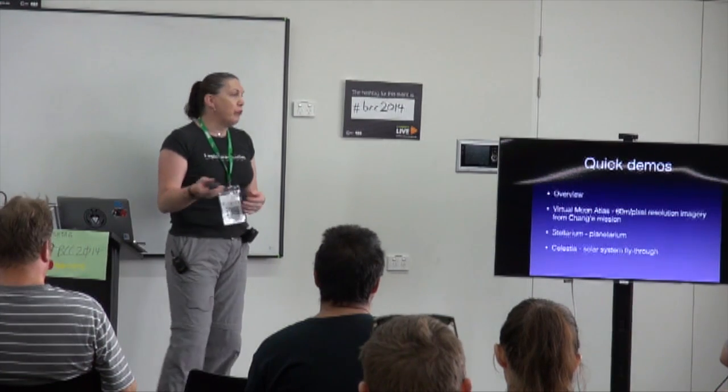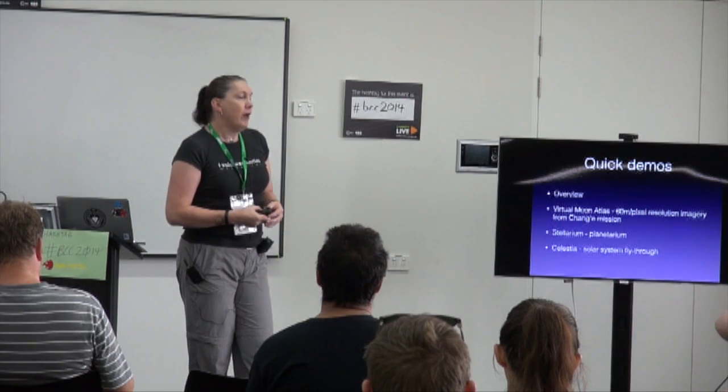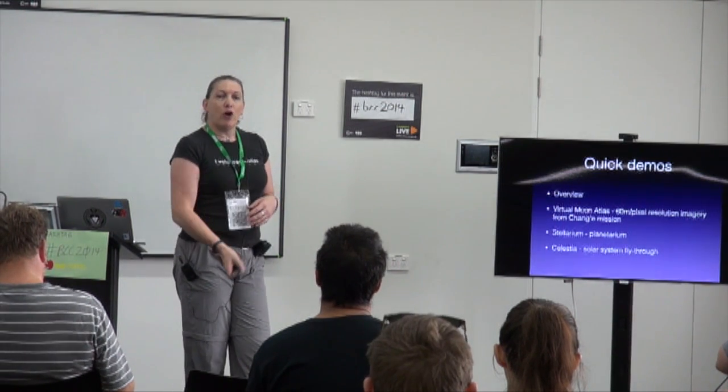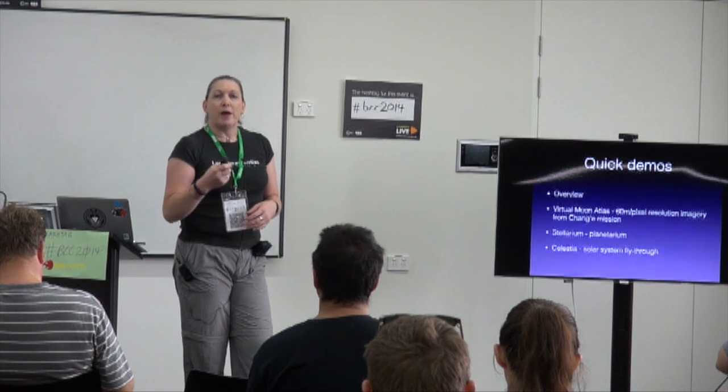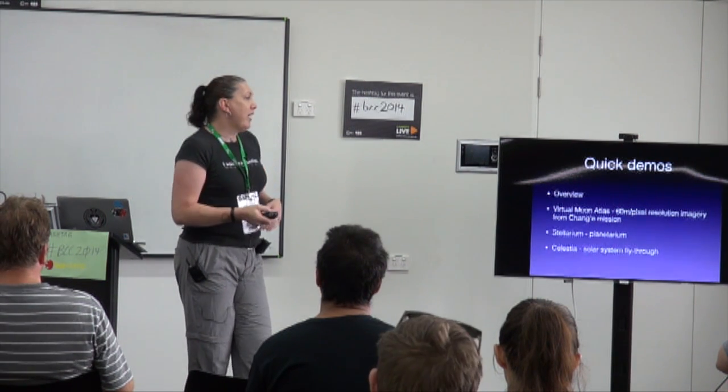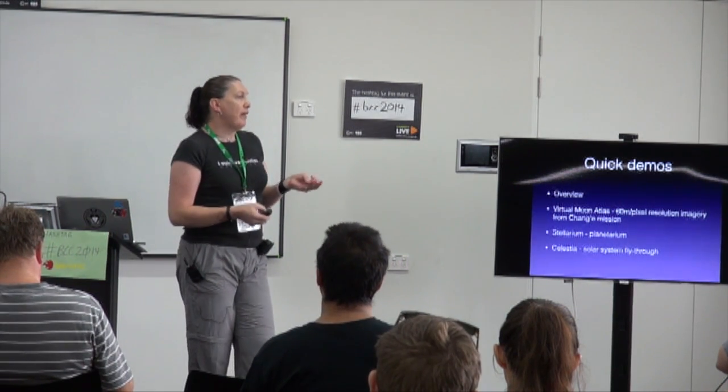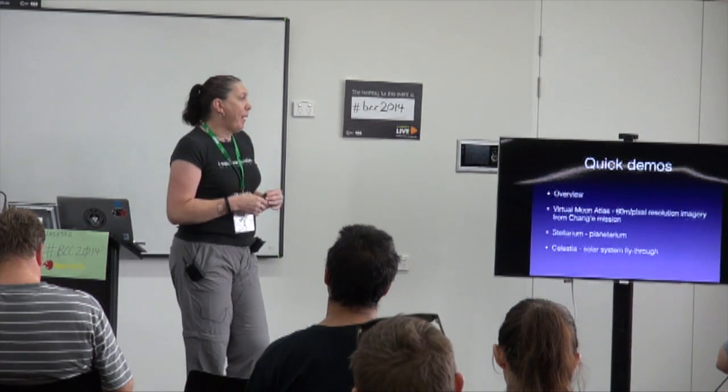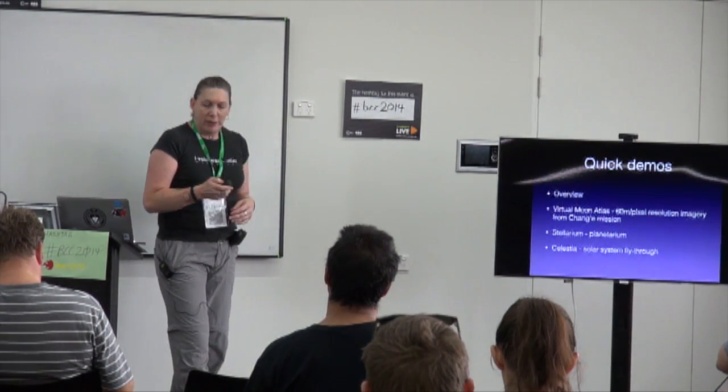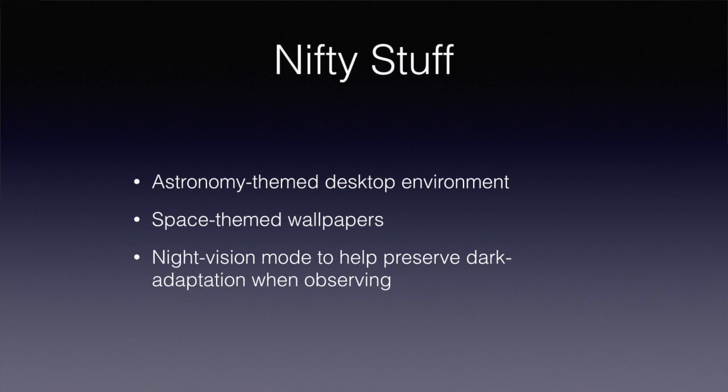There's other things like a virtual moon atlas, which actually uses mission data from the various different missions for moon mapping, including things like the lunar reconnaissance orbiter, also the Chinese Chang'e reconnaissance missions and so forth. And you can get data that is actually down to about, currently down to about 60 metres per pixel, which may not sound like a lot, but that's actually really detailed mapping of the moon. So, it gives you an astronomy-themed desktop environment, which is a nice thing to have if you're into astronomy. Wallpapers, all that kind of stuff.